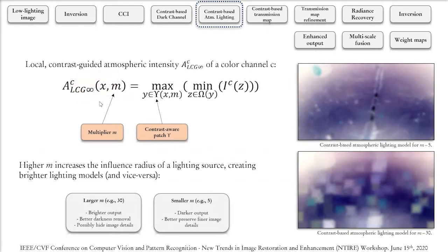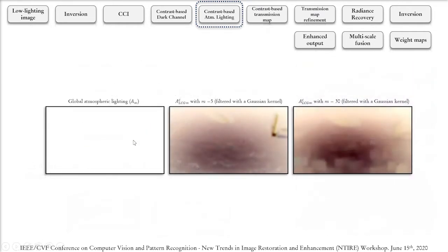We now offer the local contrast guide atmospheric intensity model of a color channel C based on a contrast aware patch Upsilon and the multiplier M which is set by the user. This element represents the dark channel of a single color channel R, G, or B. The choice of multiplying parameter M is critical. Larger M's would create brighter outputs with better darkness removal but they could possibly hide image details because of pixels with intensities too close to saturation. Smaller M's on the other hand would create darker outputs but would do a better job in preserving the finer details of the image and this is the reason why we actually calculate two atmospheric lighting models, one for M equals 5 and the other one for M equals 30, so that we can harvest the advantages of both.